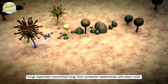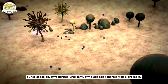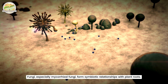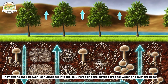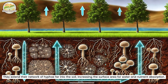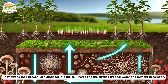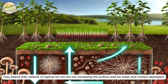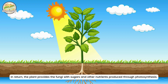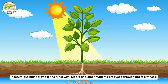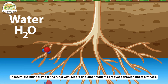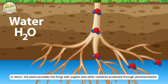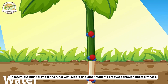Fungi, especially mycorrhizal fungi, form symbiotic relationships with plant roots. They extend their network of hyphae far into the soil, increasing the surface area for water and nutrient absorption. In return, the plant provides the fungi with sugars and other nutrients produced through photosynthesis.